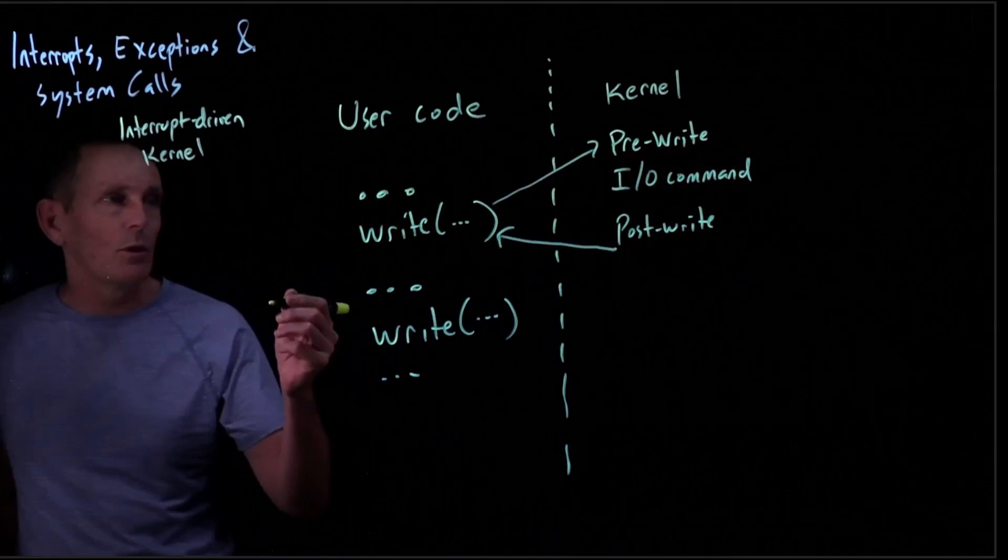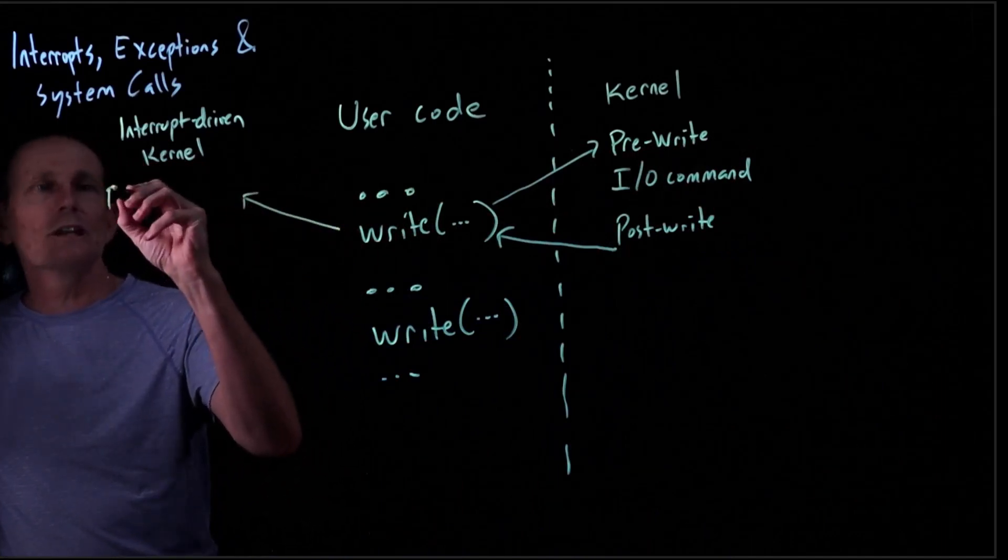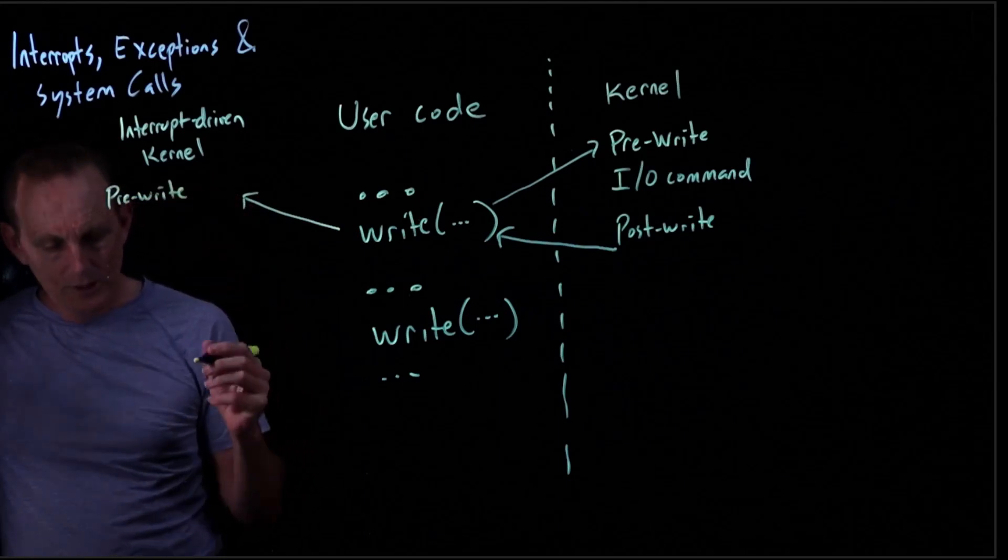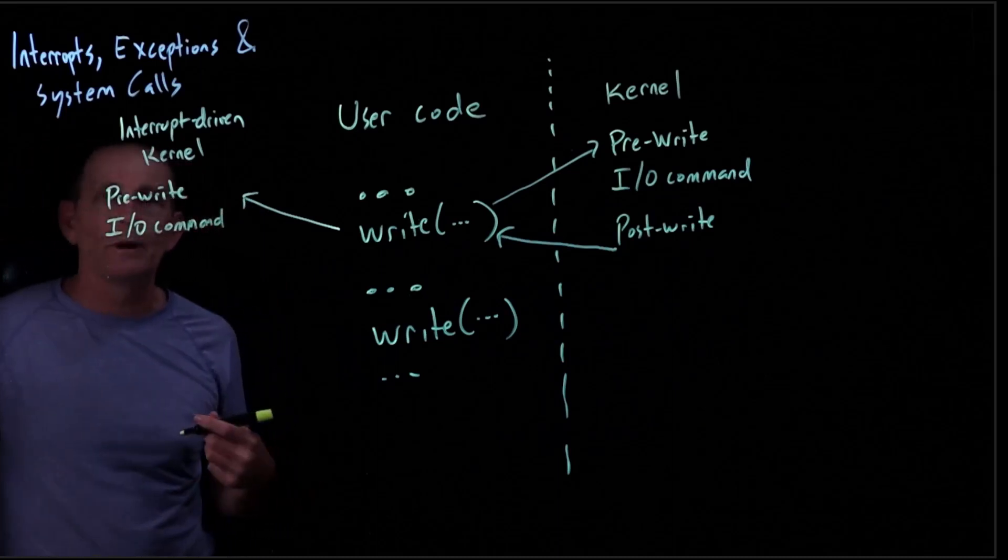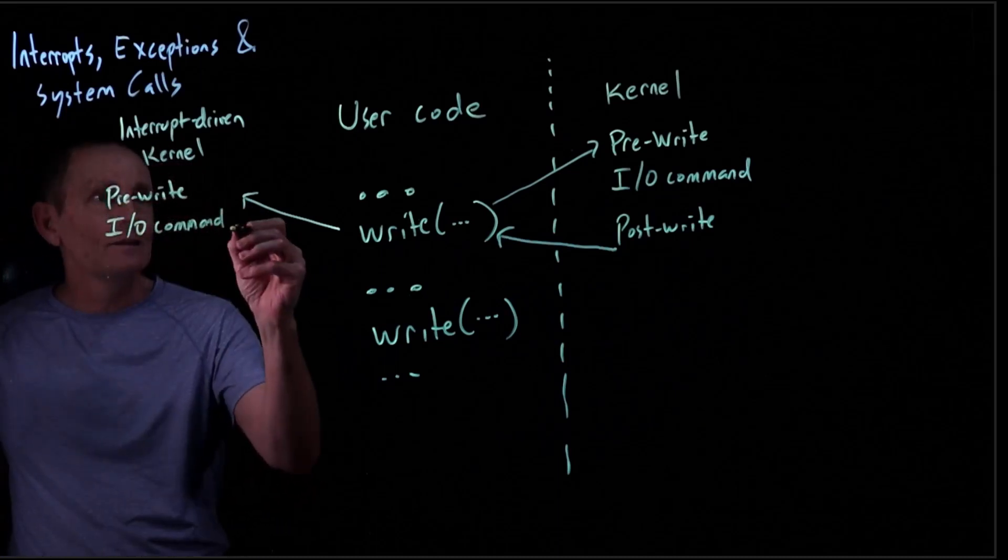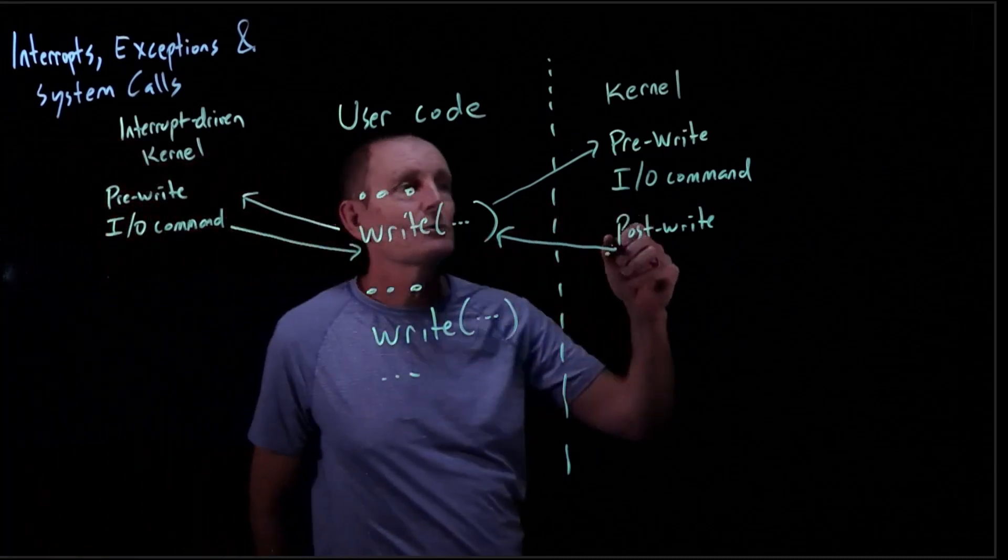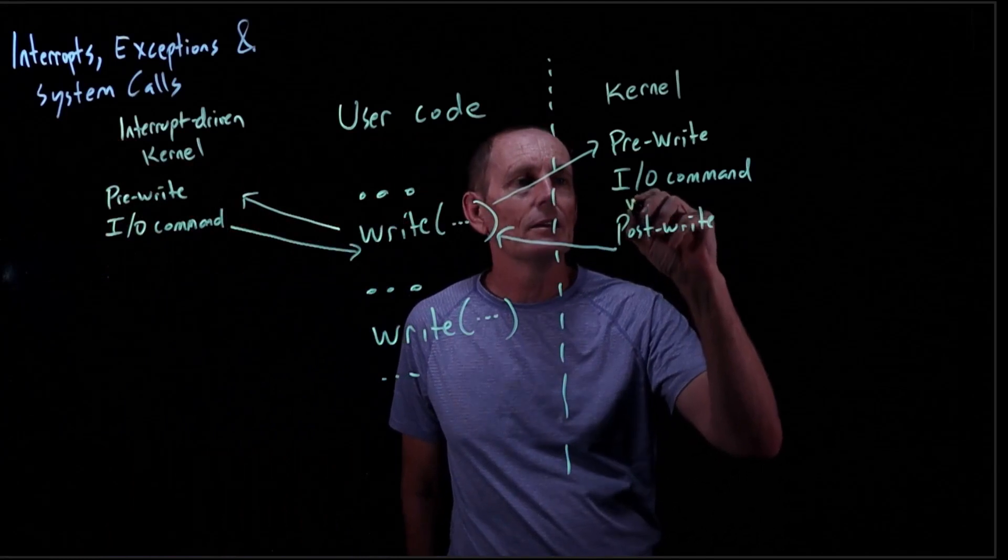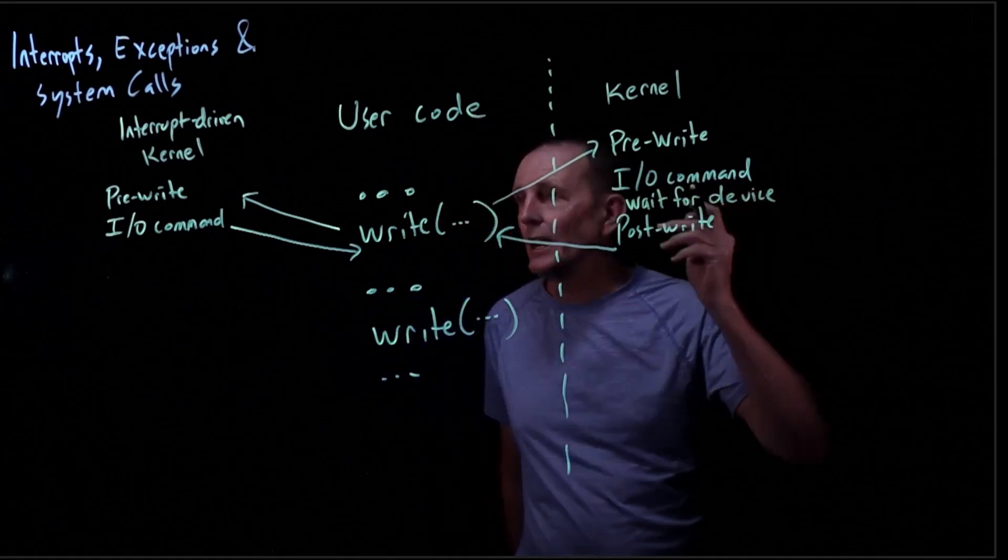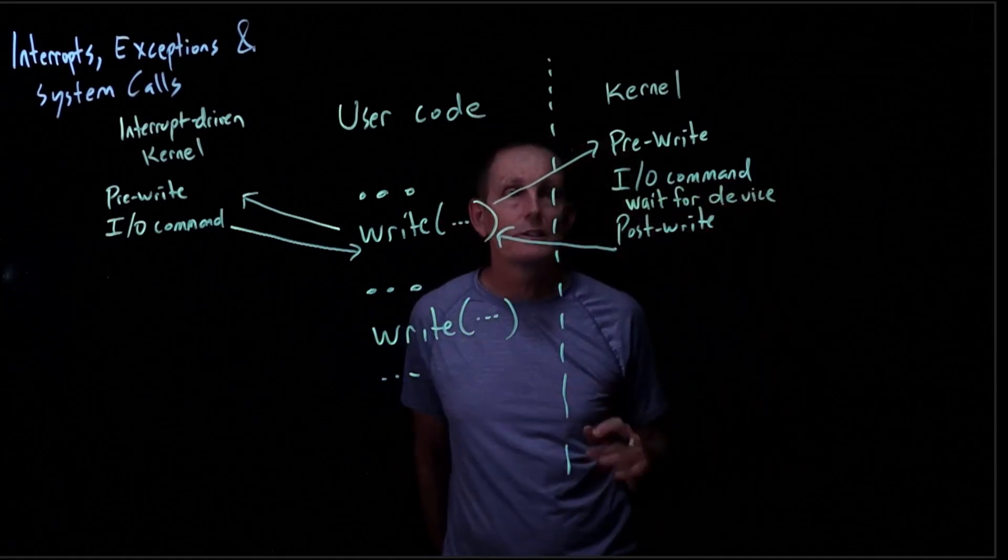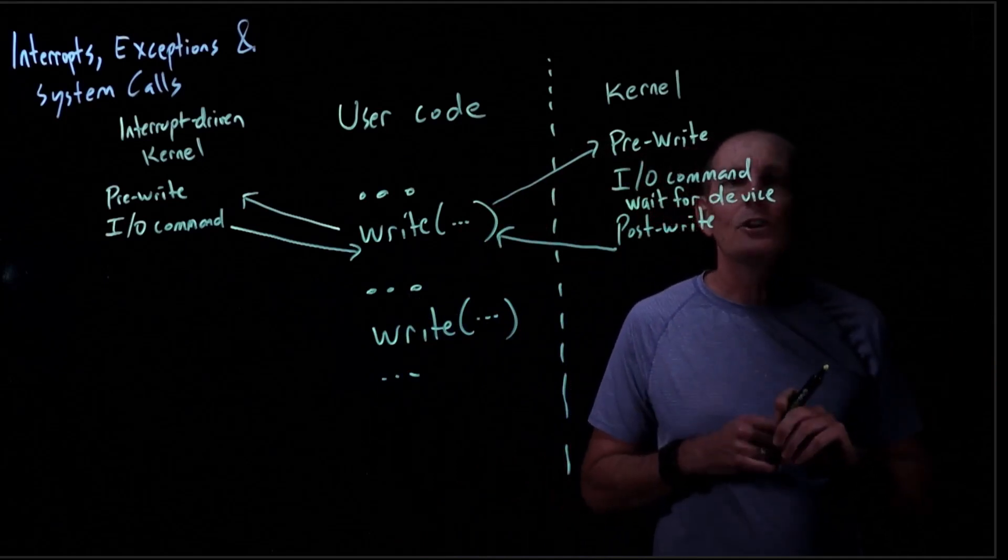Instead, let's say we have an interrupt-driven kernel. We do a write that executes code that does a pre-write, then we issue the I/O command. At this point we have told the disk to do the write. Then we would return. The difference is, without interrupts, we have code that's waiting for device. This waiting for device we no longer have because we're not going to wait. We're going to just move ahead and let the device do its own thing.